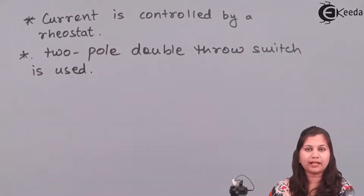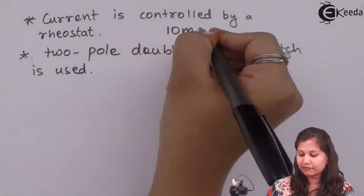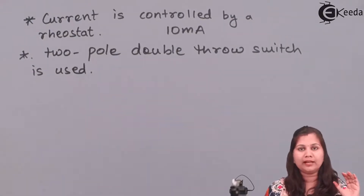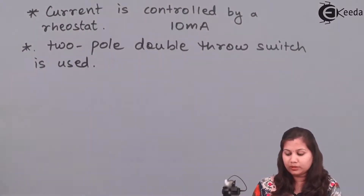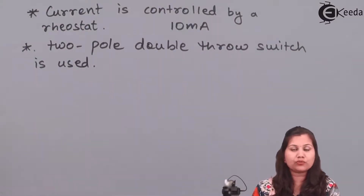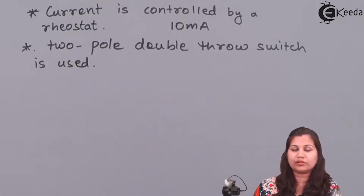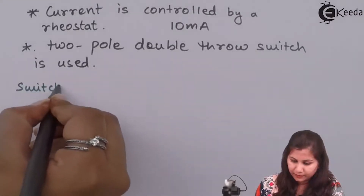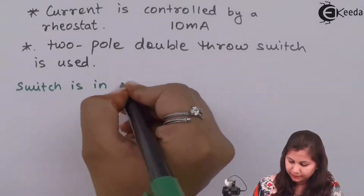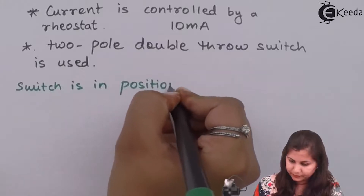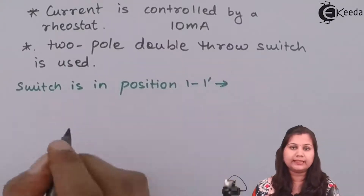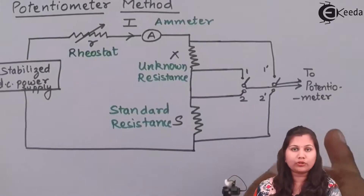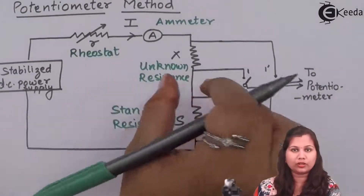Once we have set the value of the working current — say 10 milliamperes — we are not going to change the settings of the rheostat for the two connections; that will be fixed. So the two-pole double-throw switch is used for making the two connections: one with the unknown resistance and a second time with the standard resistance. When the switch is in position 1-1', the unknown resistance is connected to the potentiometer, so the potentiometer measures the voltage drop across this unknown resistance.